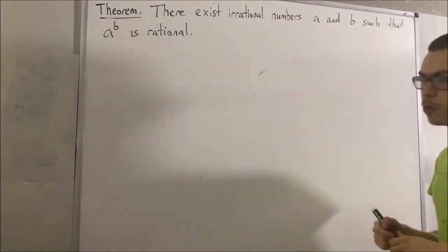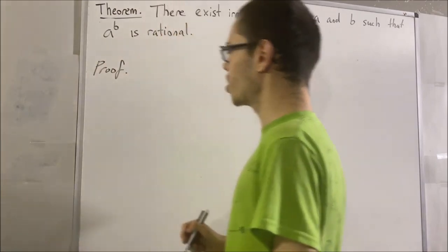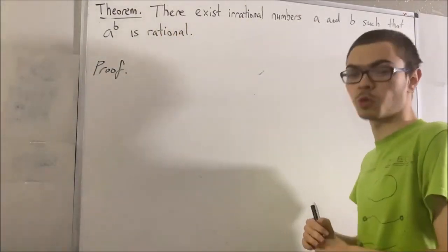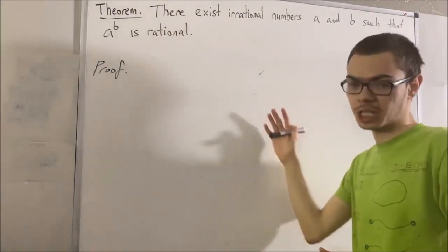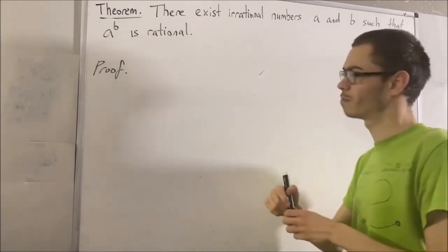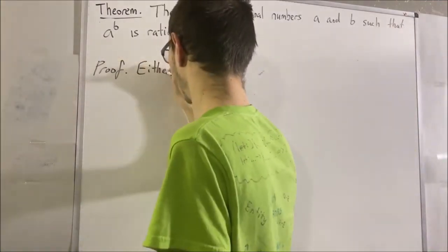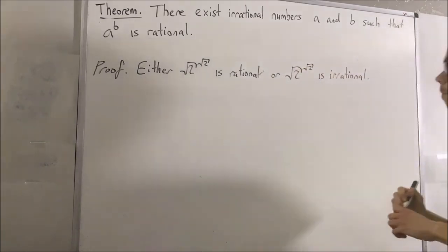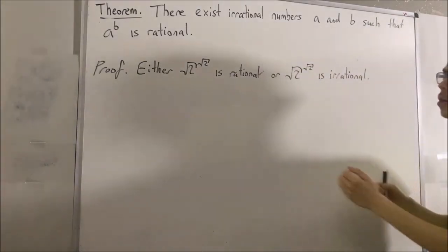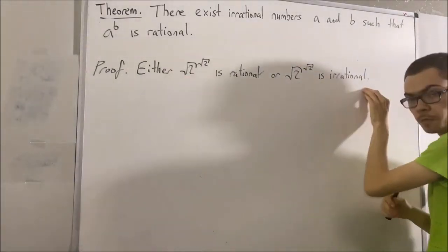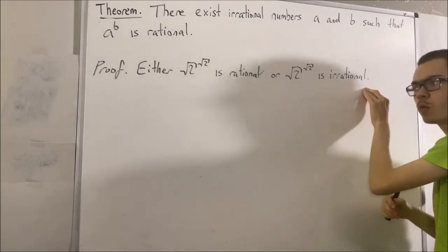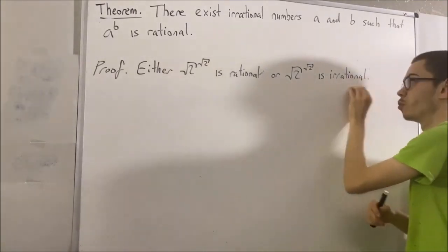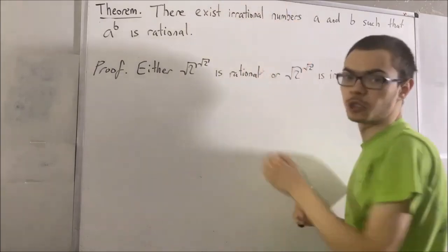Let's start out the proof. To start, either the square root of 2 to the power of square root of 2 is rational, or it's irrational. Either one of these is true. And what we're going to do is show that no matter which one is true, the theorem must be true.